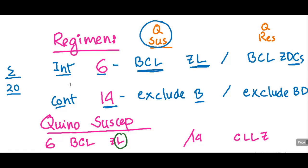So you have to know the BCL and ZL. B, obviously, bedaquiline. C, what is C? C is clofazimine. L, linezolid, yes. So bedaquiline, clofazimine, linezolid. Bedaquiline, clofazimine, linezolid. Z is pyrazinamide.